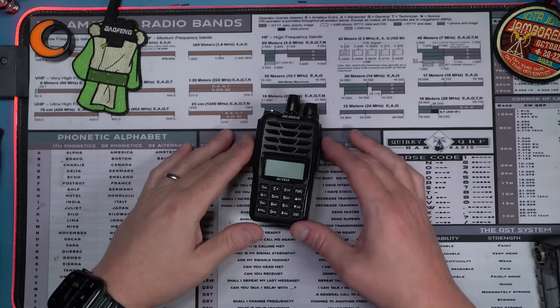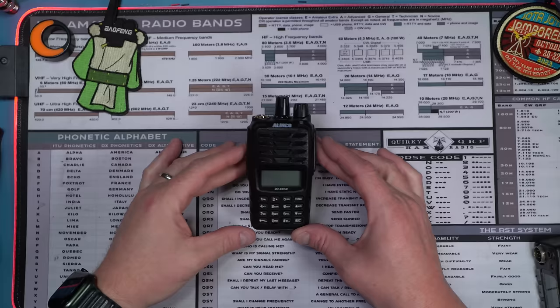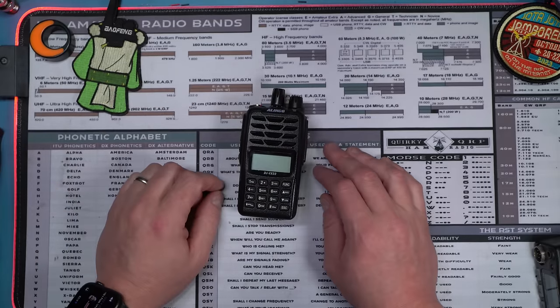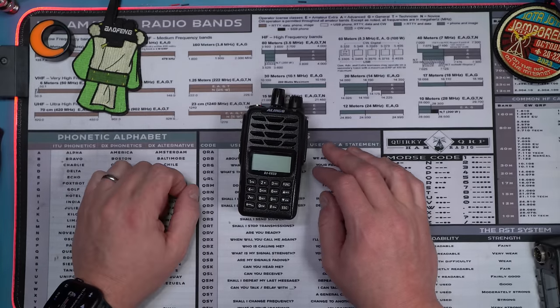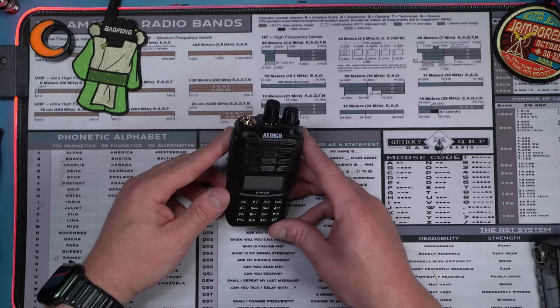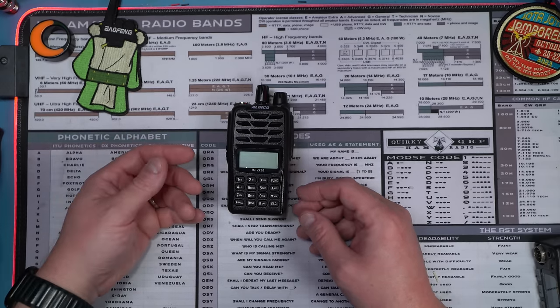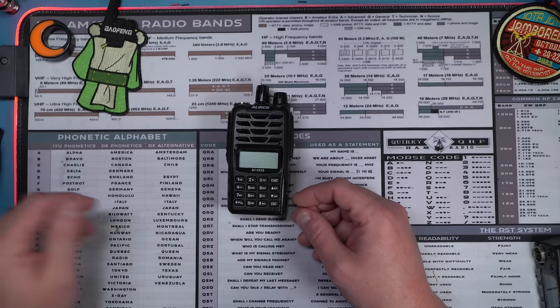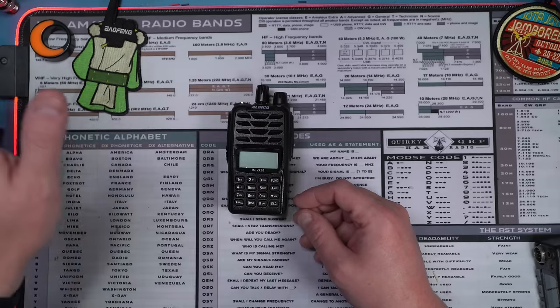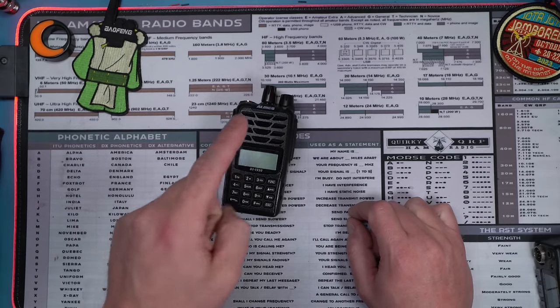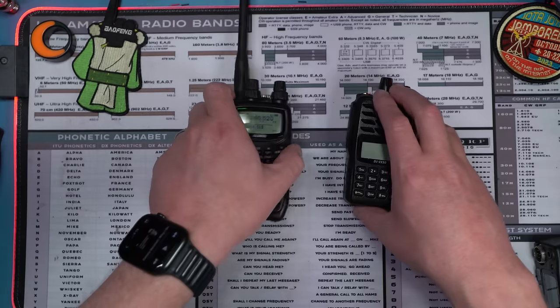Alinco is a brand of radios that I've admired ever since I've been a ham, and this is probably their most milquetoast standard offering, the DJ-VX50, just a dual band radio. No different than what you might see with the FT-4X from Yaesu, even the cheaper Chinese radios. But the reason why I like Alinco is not because of radios like these. It's because of radios like these.